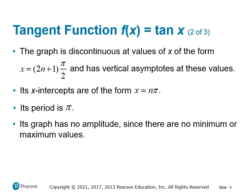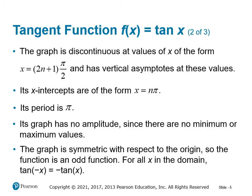The period of tangent is pi. Its graph has no amplitude, because amplitude is half the distance between the largest and smallest values — but since tangent goes from negative infinity to positive infinity, it has no extreme values, so no max or minimum. The graph is symmetric with respect to the origin, making it an odd function, where tangent of negative x equals negative tangent of x.